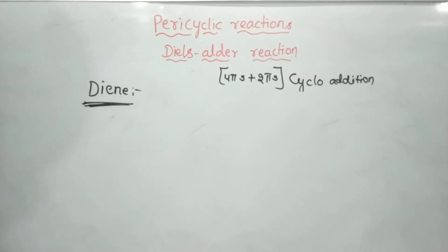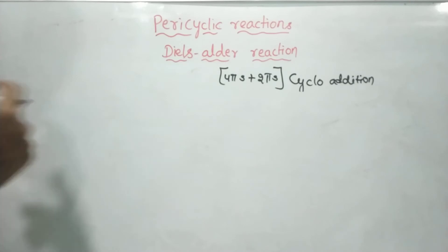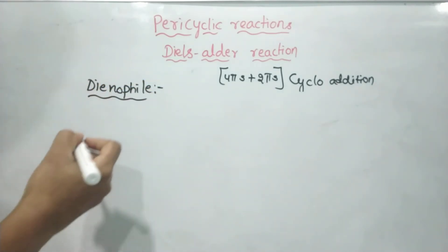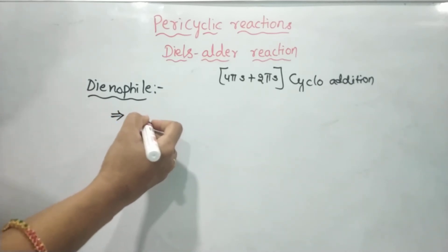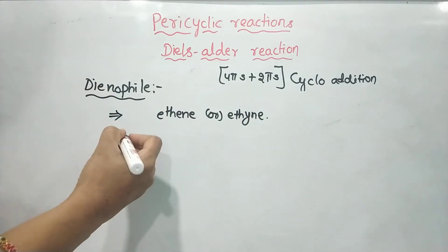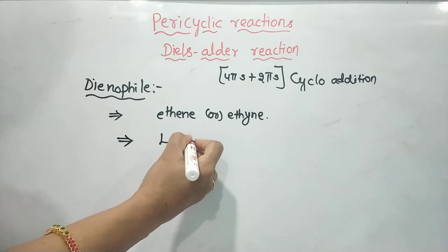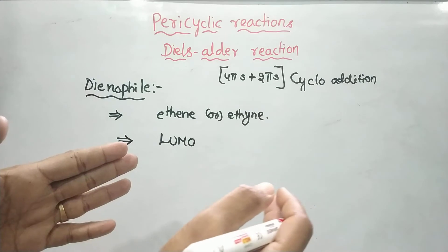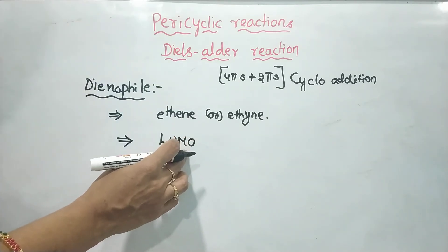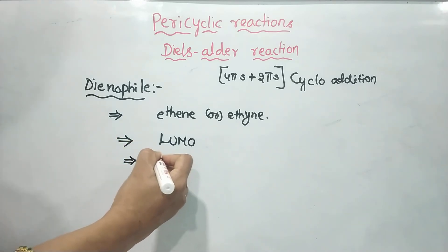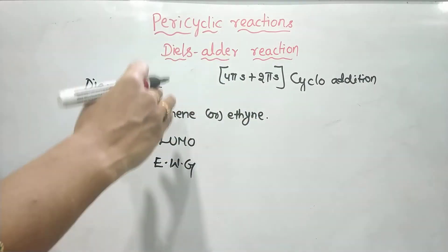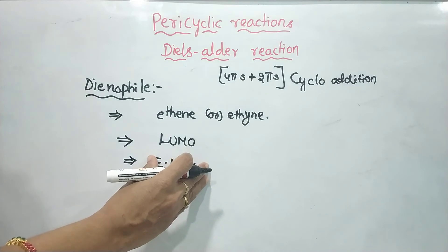Let's look at the dienophile. The dienophile is very important. The dienophile is a derivative of ethene. The dienophile will provide the LUMO — the lowest unoccupied molecular orbital. The substituents allow for electron withdrawing. Compared to the diene which has electron donating groups, the dienophile has electron withdrawing groups.